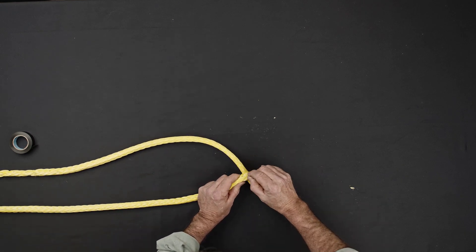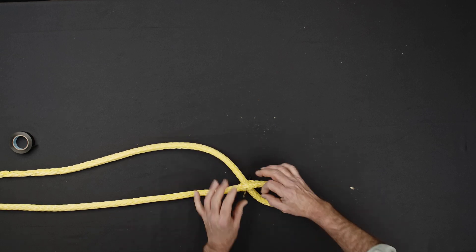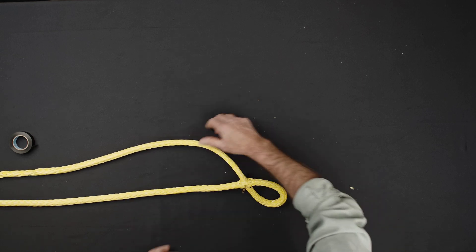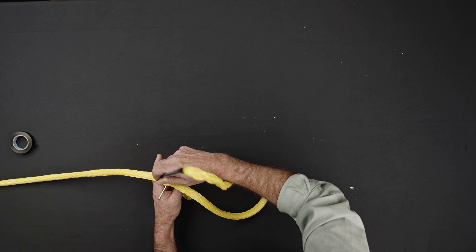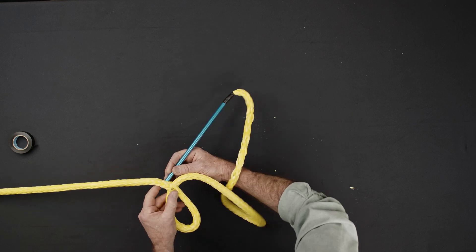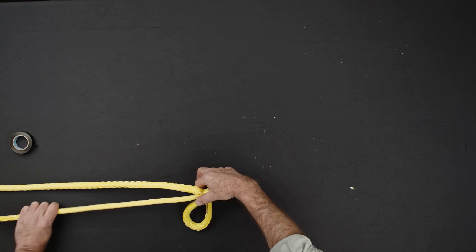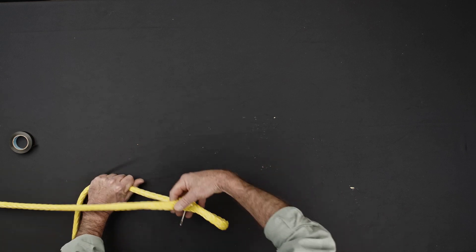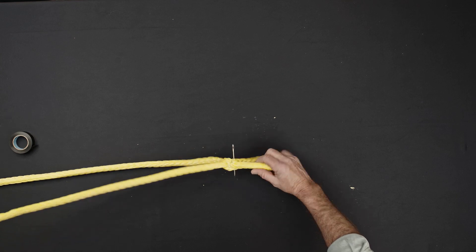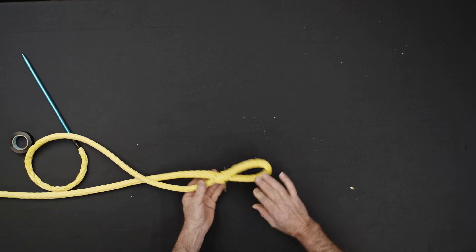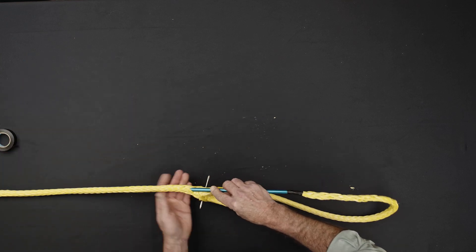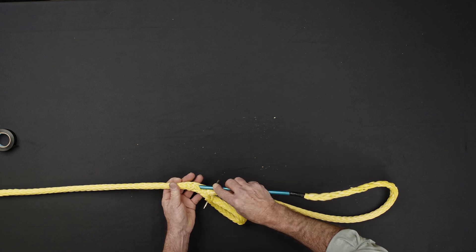If desired, you can pin the rope at the second eye mark to prevent the eye from moving. Pass the fit back through the center of the rope two strand pairs down from the point at which the rope exits. Count down two strand pairs and insert the fit into the hollow center of the rope.